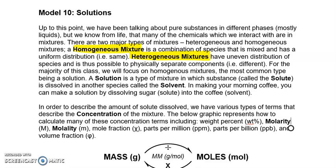For the majority of this class, we're going to be talking about homogeneous mixtures, and most of them will be classified as a solution. A solution is a mixture where you have two species mixed together, and the result can be either a liquid or a gas — we're mostly going to talk about liquids. Of the two or more components, we have specific names: solute and solvent. The solvent is the species with the majority. For example, in salt water, water is the solvent, and the solute is typically what you're adding — like salt.